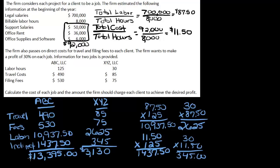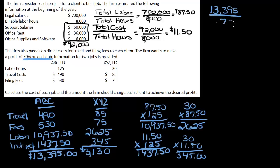Now that's cost — that's not what we're going to charge the client, because if that's what we charge, we won't make any money. This says we want to earn a profit of 30% on each job. If we want profit to be 30%, that means our cost would be 70%. So if the cost is 70% of the total price, we take the cost of the job and divide by 0.70 to get a larger number — that'll be our price.